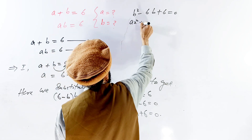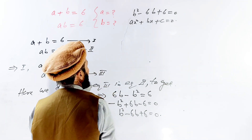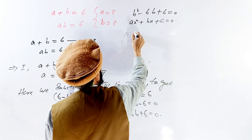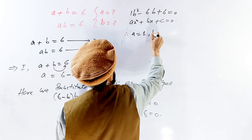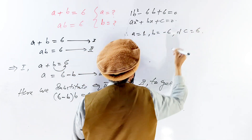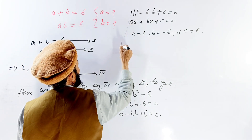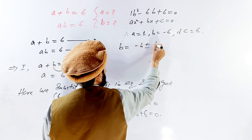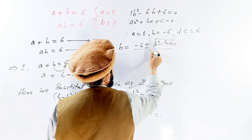The standard quadratic form is ax squared plus bx plus c is equal to 0. Comparing the coefficients, we get a is equal to 1, b is equal to minus 6, and c is equal to 6. We substitute these into the quadratic formula: x equals minus b plus or minus square root of b squared minus 4ac, divided by 2a.